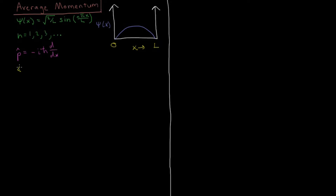The expectation value of momentum — its average value — is going to be the integral of... In general this would be from minus infinity to infinity, but our wave function is only non-zero between 0 and L, so we're only going to integrate between 0 and L. Then we need psi-star, the wave function's complex conjugate, but in this case it's just real, so we can put in the wave function itself: sine of n pi x over L.